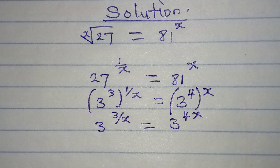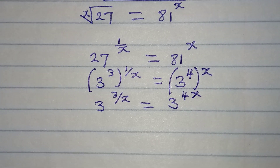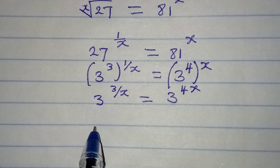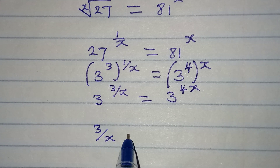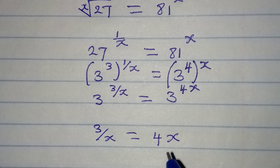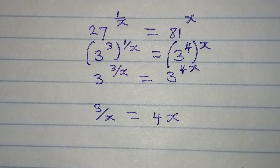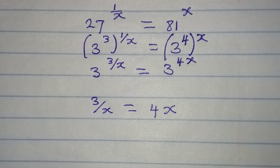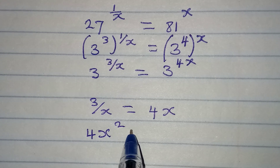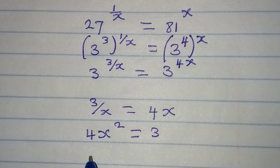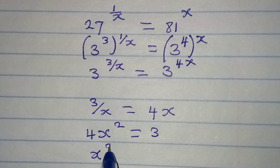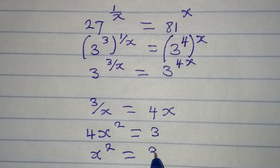Since the bases are the same, we can work with the exponents directly. We set 3 over x equal to 4x, then cross-multiply to get 4x squared equals 3. Dividing both sides by 4 gives us x squared equals 3 over 4.